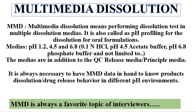Once you have decided the QC media, the multimedia profiling is done in the other medias. For example, if your QC media is 0.1 normal HCl, that is pH 1.2, then your multimedia dissolution will be performed in pH 4.5 and 6.8 — so total three dissolutions. And if your product has a QC release media of water, then you have to perform multimedia dissolution in the remaining three medias: pH 1.2, 4.5, and 6.8.